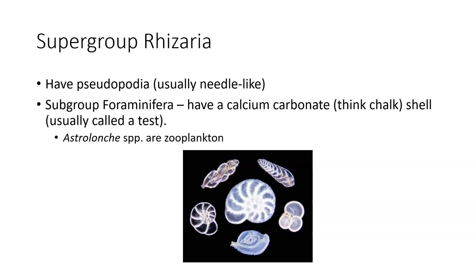The next supergroup is Rhizaria. This group has pseudopodia that tend to be needle-like or pointy rather than fat and globular like the amoebas we'll see later on — it ends up looking sort of like root hairs on plants, which is why it's called Rhizaria. The foraminiferans, usually just called forams, are essentially amoebas in a chalky shell. Foraminiferans create the chalk and limestone in our area. If you look at it under a microscope, you would find a lot of these little organisms in there.